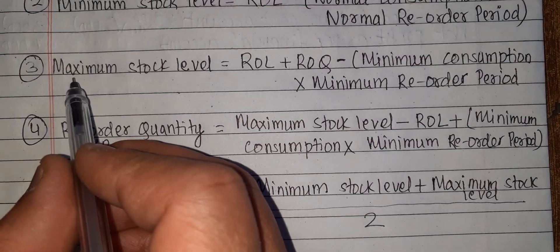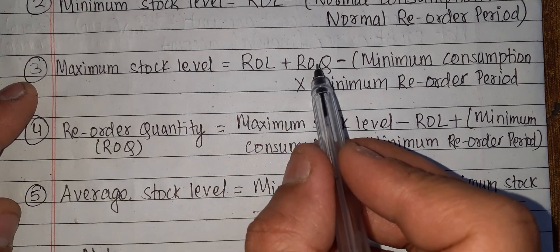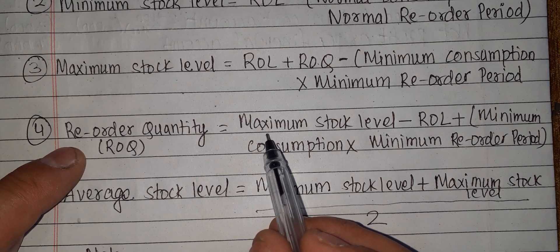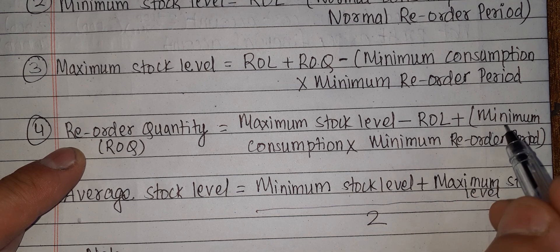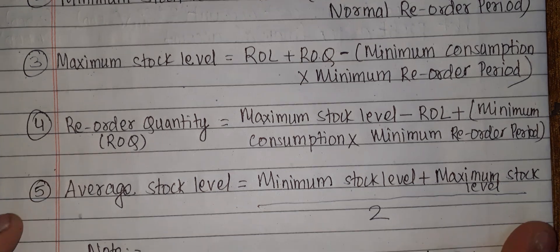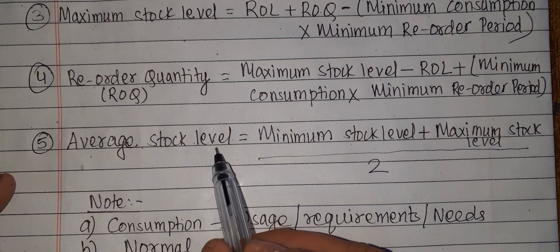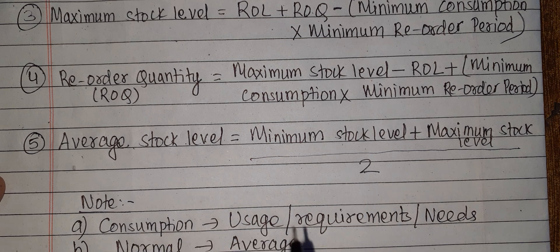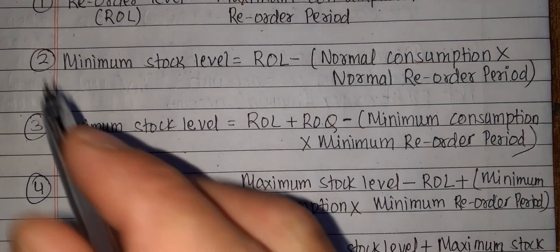Reorder quantity is derived from the maximum stock level formula. ROQ equals maximum stock level minus ROL plus minimum consumption multiplied by minimum reorder period — this is the right-side transfer. The average stock level is the minimum plus maximum divided by 2. This is the average of minimum plus maximum divided by 2. This gives us a total of 5 formulas. These are all important.